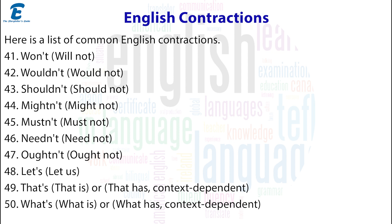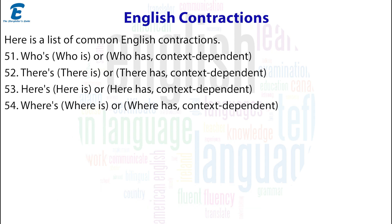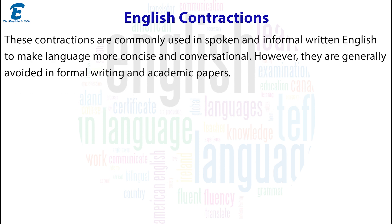50. What's = what is or what has (context dependent). 51. Who's = who is or who has (context dependent). 52. There's = there is or there has (context dependent). 53. Here's = here is or here has (context dependent). 54. Where's = where is or where has (context dependent). These contractions are commonly used in spoken and informal written English to make language more concise and conversational.